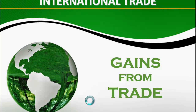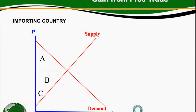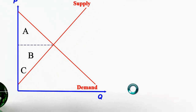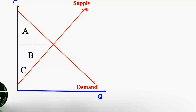Hello everyone. Today's session we will be looking at gains from trade, both for a country that exports a good and a country that imports a good. The first case is for the importing country. When this economy is closed, demand and the supply functions at home would determine the equilibrium price, and in this case it is PE.